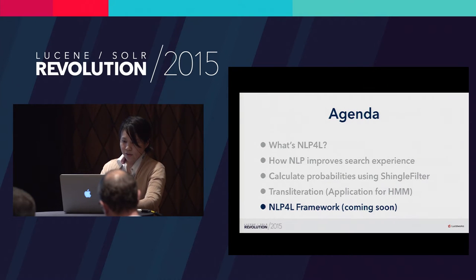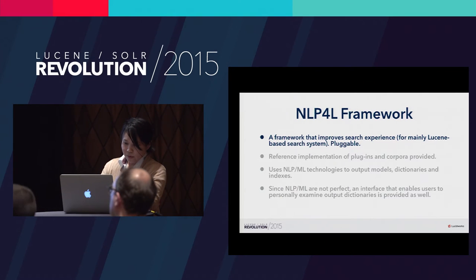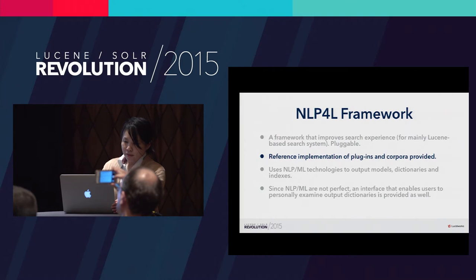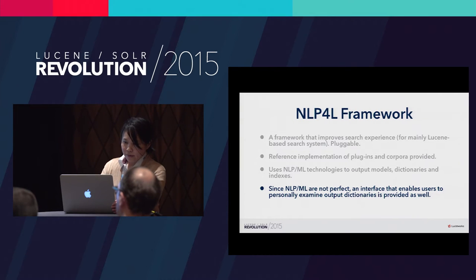This concludes the introduction of the current NLP4L tools. In addition, we are now developing a framework where NLP4L and various other NLP tools can work together. The NLP4L framework improves the search experience of index-based search systems such as Solr and Elasticsearch. We provide not only a framework but also the tools introduced today as a reference implementation. We are also planning to provide the transliteration corpus and more. We use NLP4L and machine learning techniques to output models, dictionaries, and the Lucene index. Because NLP4L and machine learning are not perfect, we provide a GUI that enables you to examine output dictionaries.